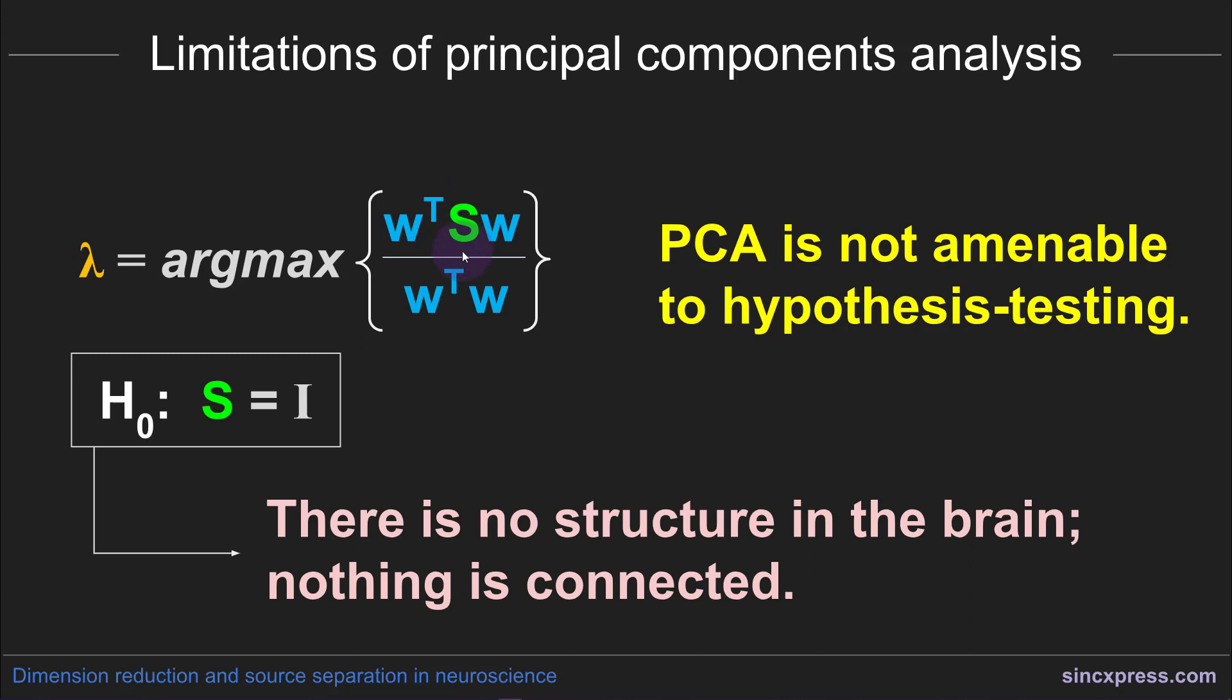So the null hypothesis is that this S covariance matrix is the identity matrix, and the identity matrix is the linear algebra version or analog of the number 1. So if this is the identity matrix, then this is just W transpose W over W transpose W, which is just 1.